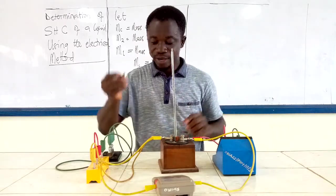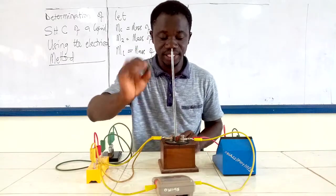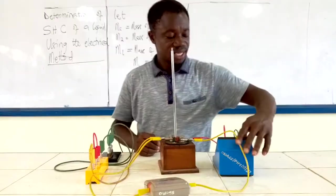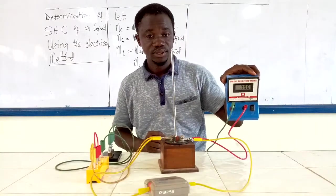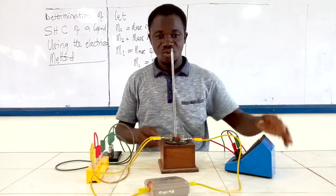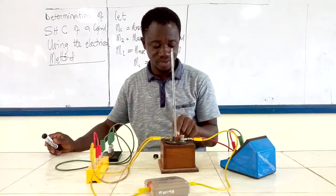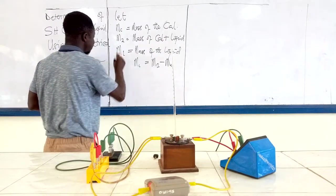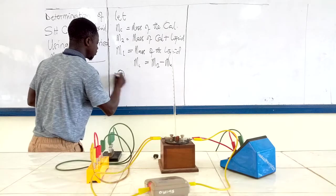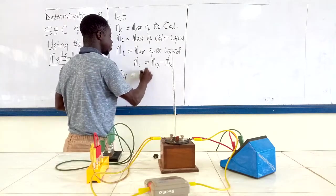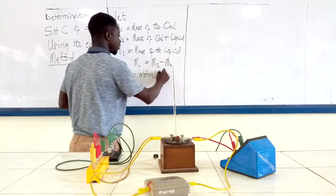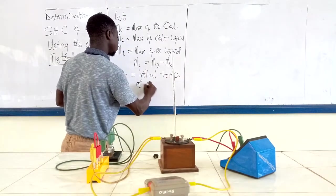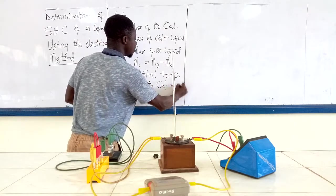Before I close the circuit, you can see I am done connecting. But the voltmeter is not reading and the ammeter is not reading because I haven't closed the circuit. I am going to first determine the initial temperature of the liquid and the calorimeter. By this time, the temperature of the liquid and the calorimeter should be the same. Let theta 1 be the initial temperature of the calorimeter and liquid.